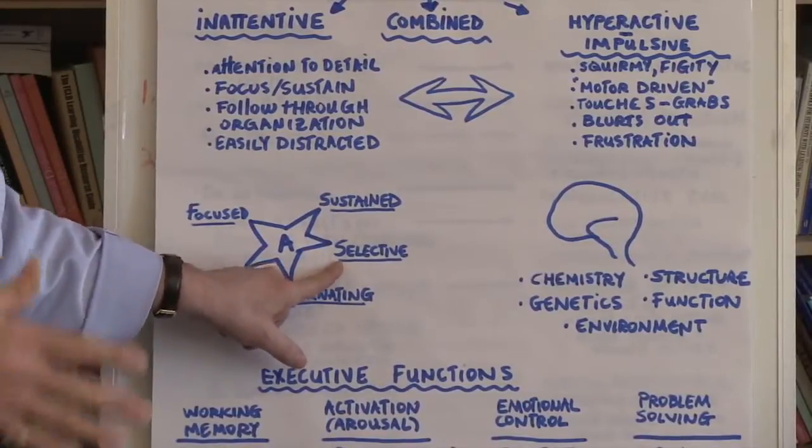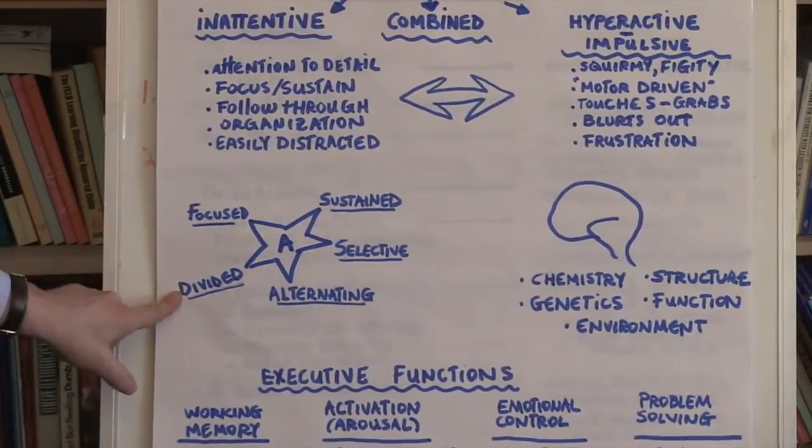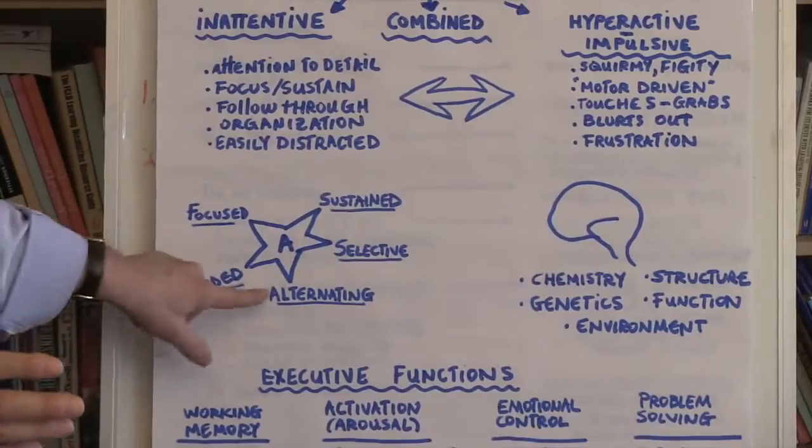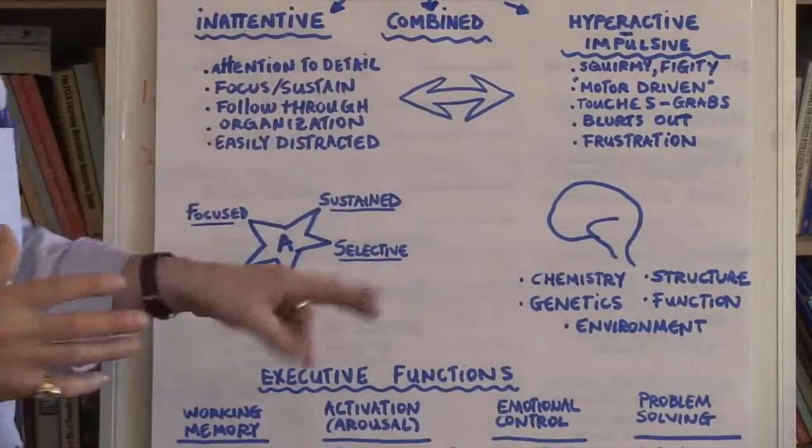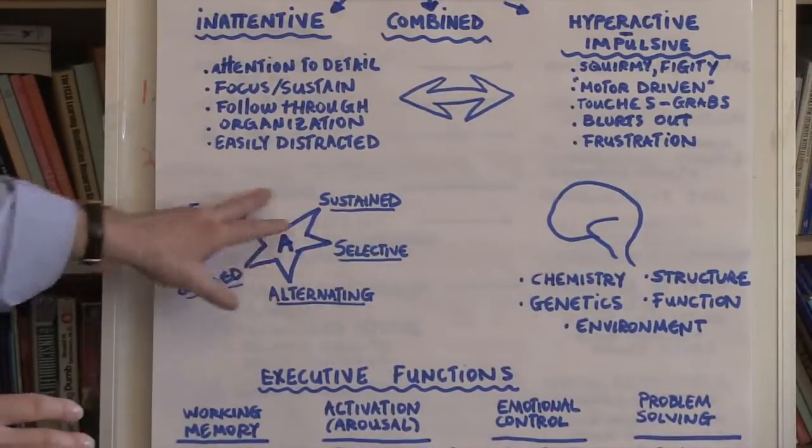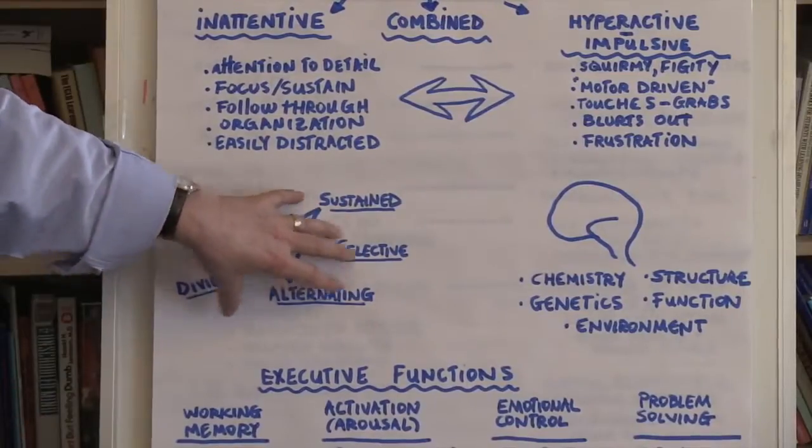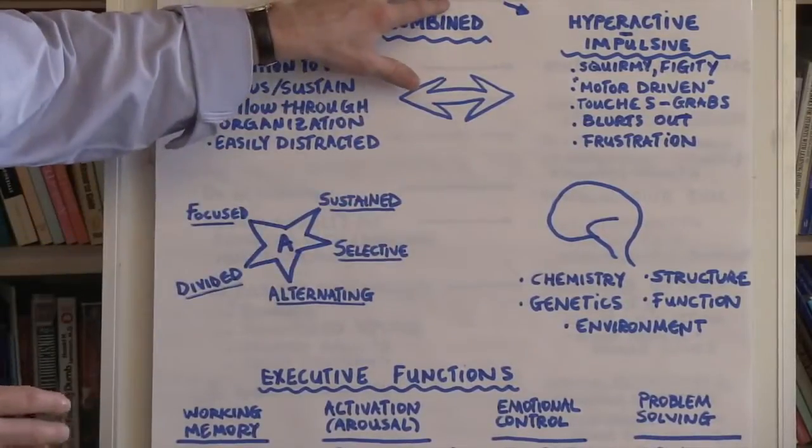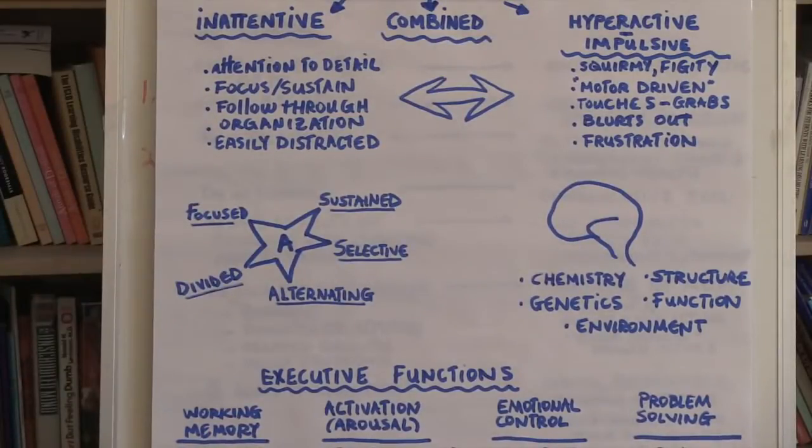Selective attention, knowing what to pay attention to as opposed to paying attention to everything that comes your way. Divided attention, being able to pay attention to more than one thing at one time. And then alternating attention, being able to look at something, look at something else and then come back. These are all manifestations of attention that may be impaired in individuals who have ADHD.